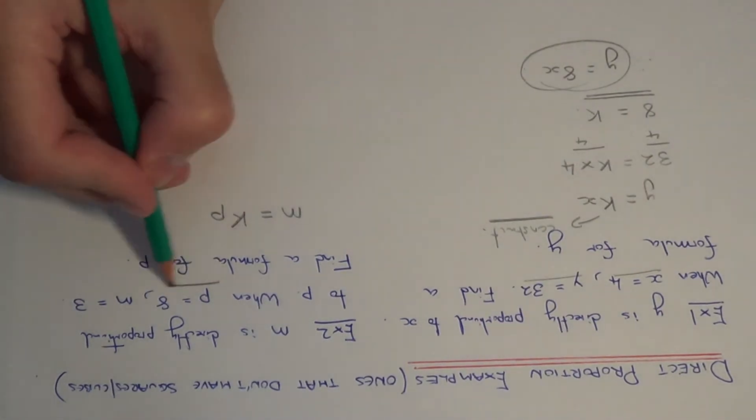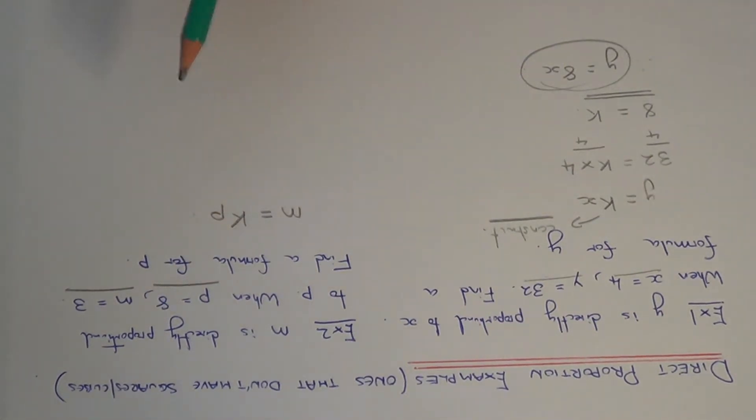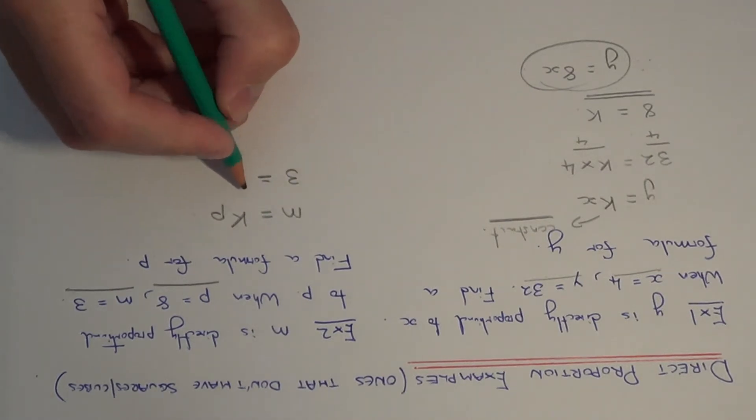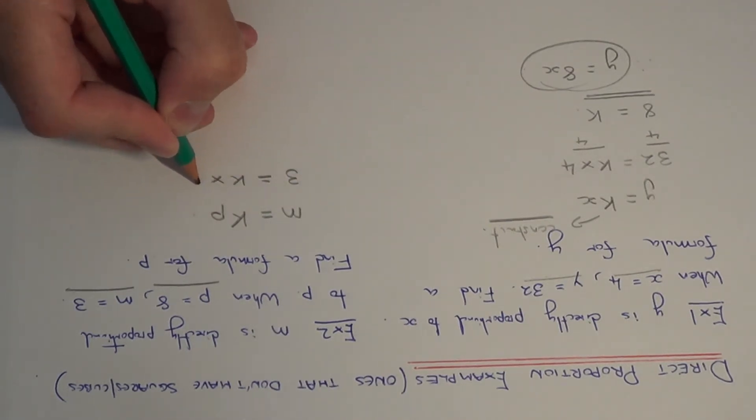So we just need to use the numbers here to work out the value of k. So if we substitute these numbers into our formula, we get 3 is equal to k times by 8.